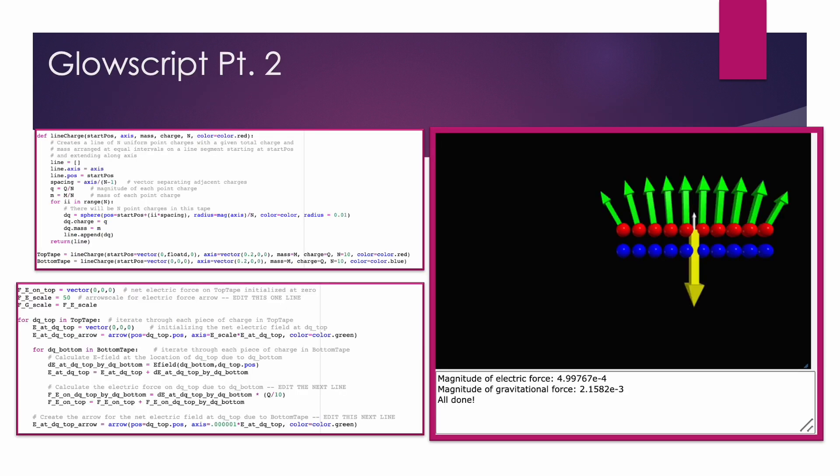The second model represents the tapes as line charges, where the total charge of tape is spread evenly across the length. Here you can see the function that creates a line of spheres with n equals 10 separate points to create each line charge.